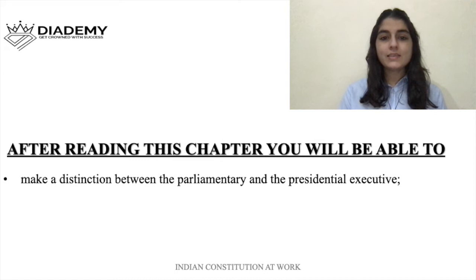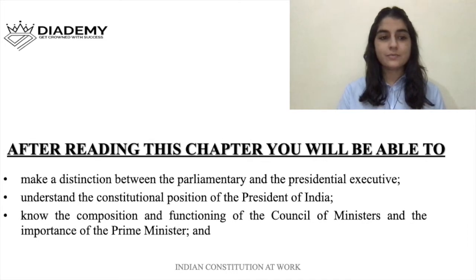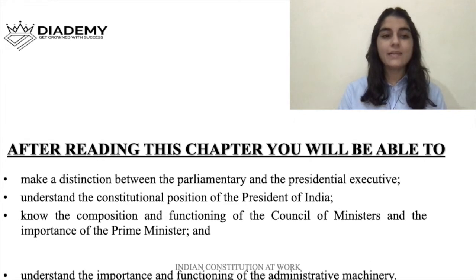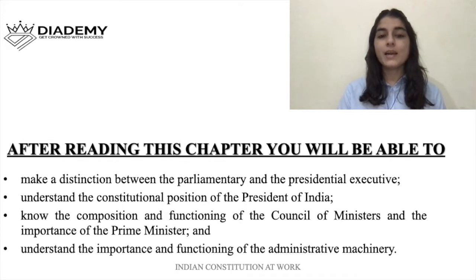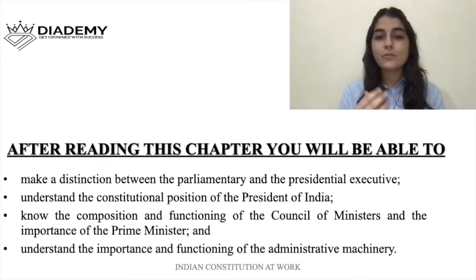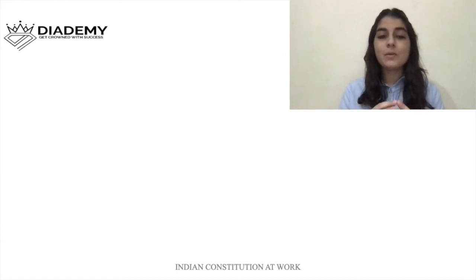After reading this chapter you will be able to make a distinction between the parliamentary and the presidential executive, understand the constitutional position of the President of India, know the composition and functioning of the Council of Ministers and the importance of the Prime Minister, and understand the importance and functioning of the administrative machinery. Basically in this chapter we will understand what is the meaning of executive, who comprises the executive, what is the position of the Prime Minister, the President, and their discretionary powers.